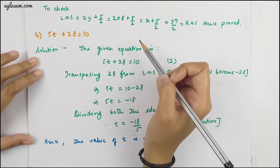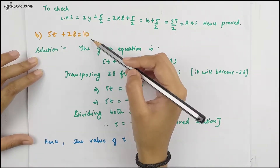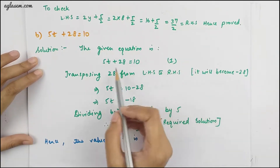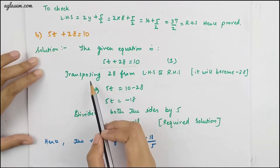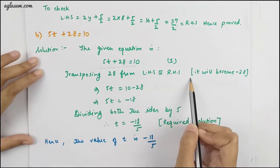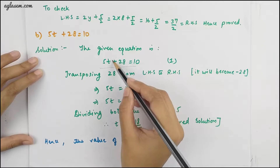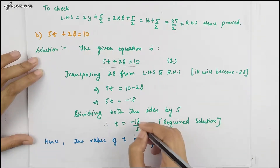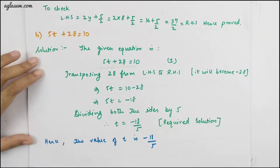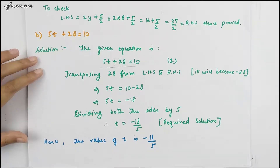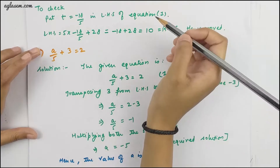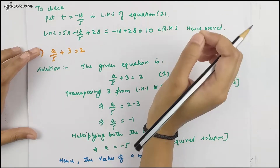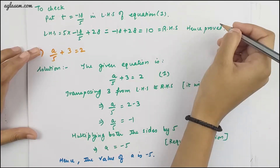The B part of the same question is 5t + 28 = 10. Transposing 28 from LHS to RHS, the sign changes from plus to minus. From there, t = −18/5. So the value of t is −18/5. To check, put the value of t into the given equation and LHS equals RHS.